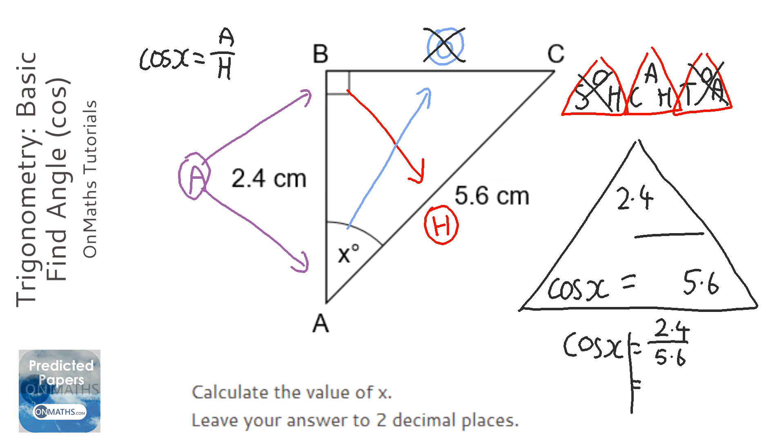Now we're going to solve this. The way of solving it is we've got to do the opposite of cos, which is inverse cos. We've got to do that to both sides to work out what x is. In the calculator, we're going to type in inverse cos 2.4 over 5.6.